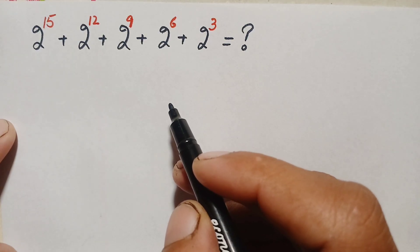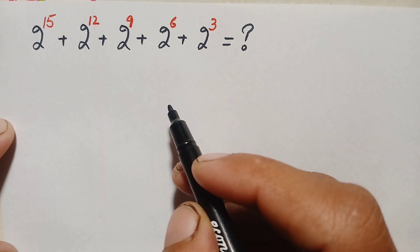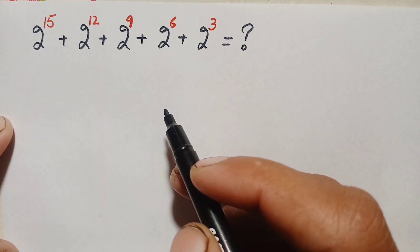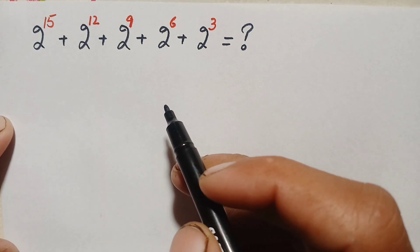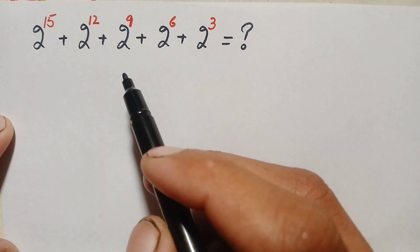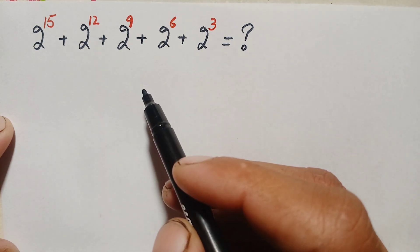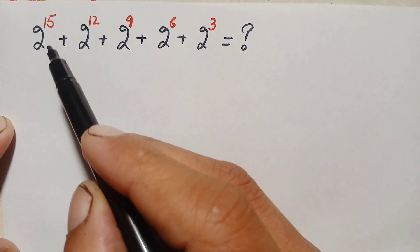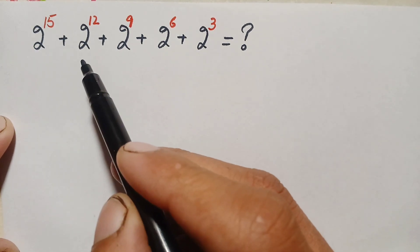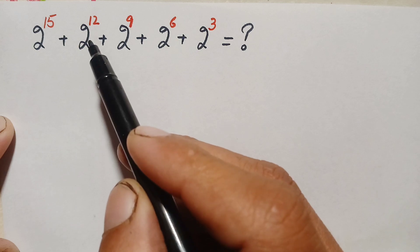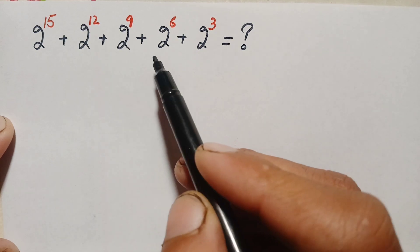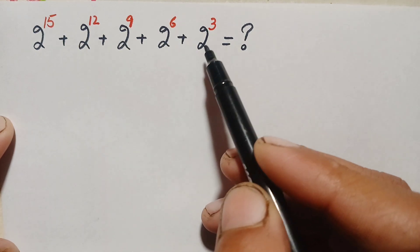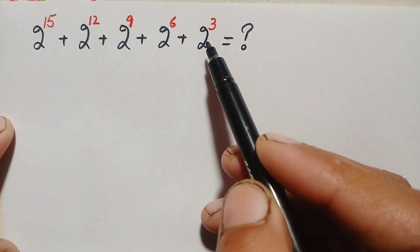Hello everyone, welcome back to Math Explorer. In this video, I'm going to solve and find the value of this beautiful simplification math problem, which is 2 raised to power 15 plus 2 raised to power 12 plus 2 raised to power 9 plus 2 raised to power 6 plus 2 raised to power 3.